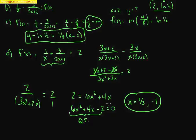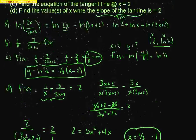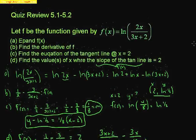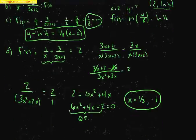Those are the x-values where the slope equals 2. That wraps up a nice four-part problem dealing with logarithms and derivatives — covering expansion, the derivative, equation of the tangent line, and finding specific slope values. Let's look at another review problem.